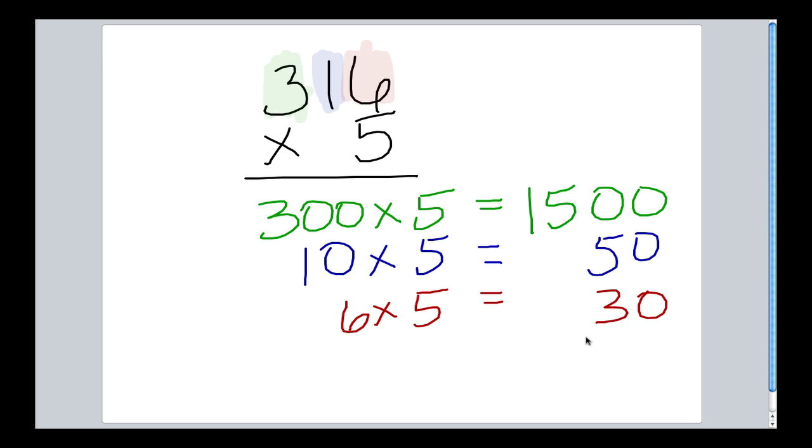We took it apart. Let's put it all back together. Let's add up 1500 plus 50 plus 30.